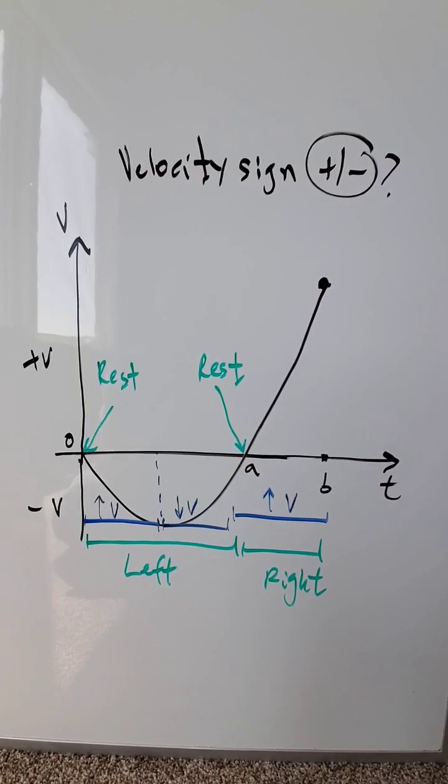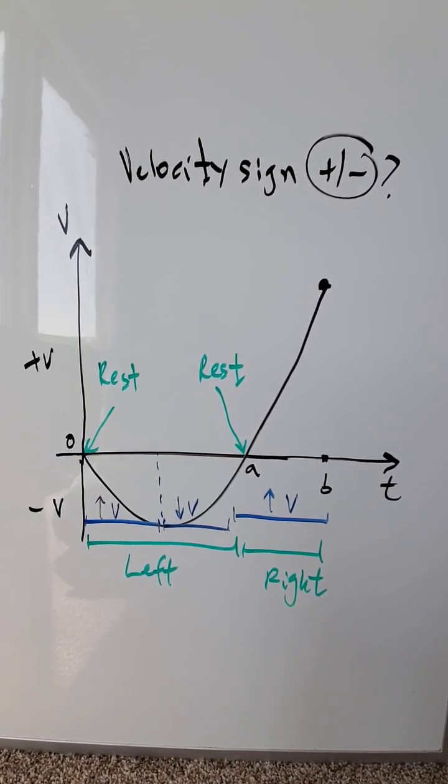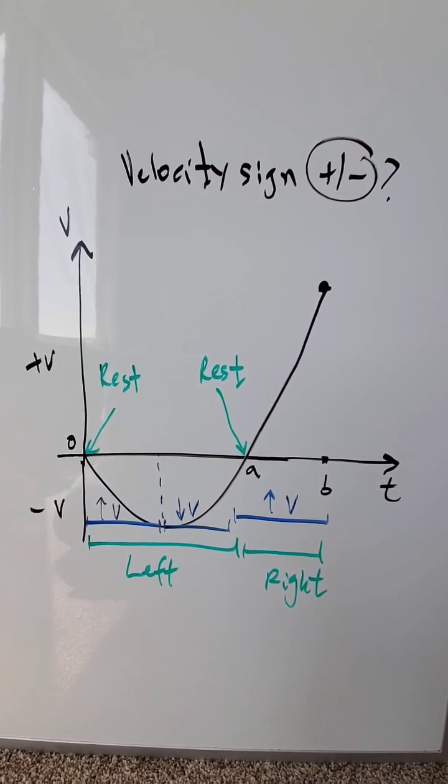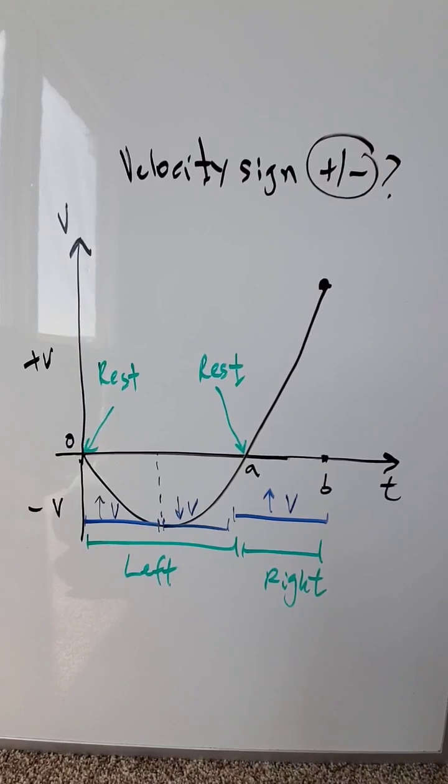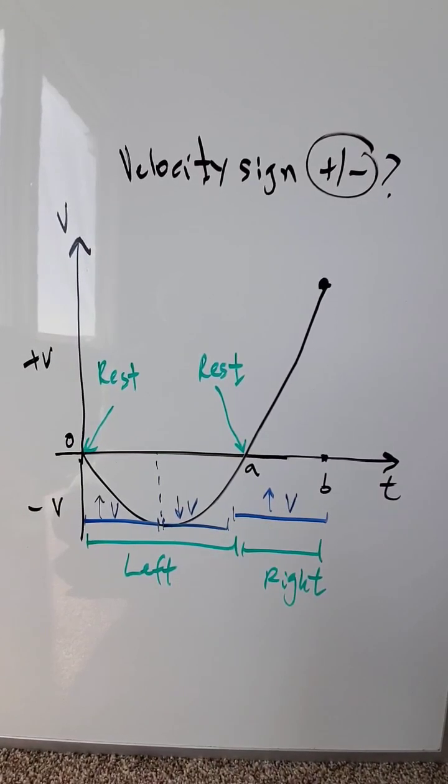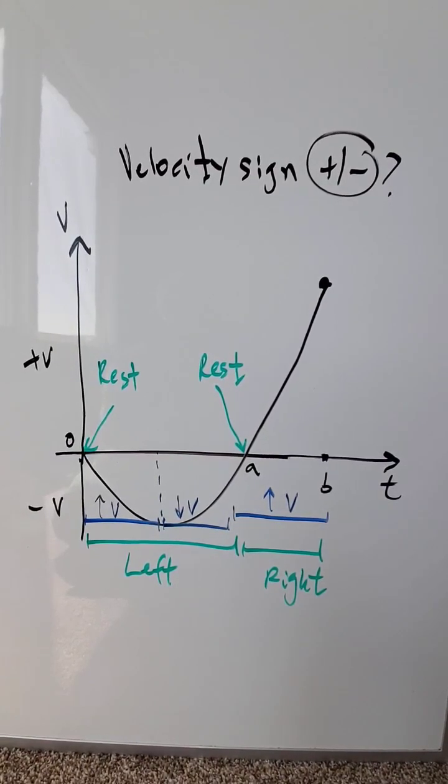Now focus on the time interval A to B. Your object is moving again, but now it's moving entirely towards the right. The velocity increases all the way up to the end of interval B. Keep in mind that velocity signs—positive and negative—have to do with vectors, so think of it in that way.